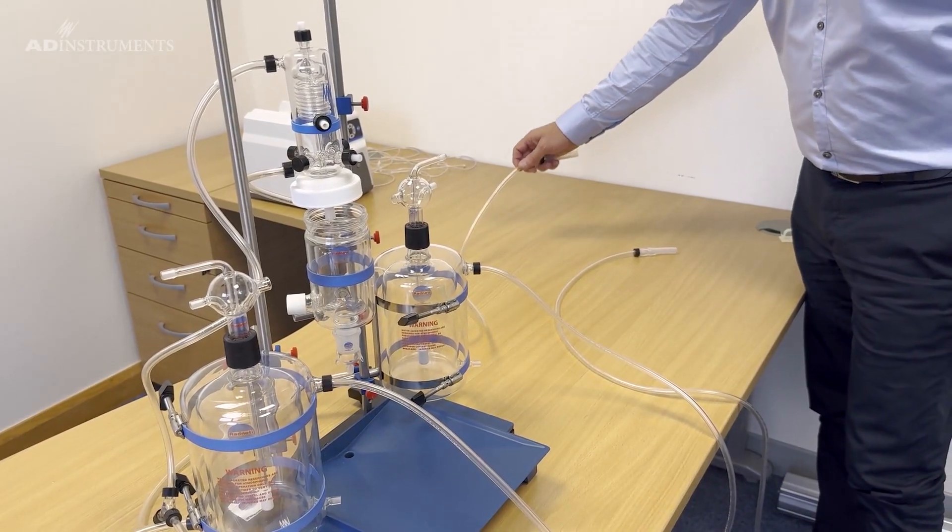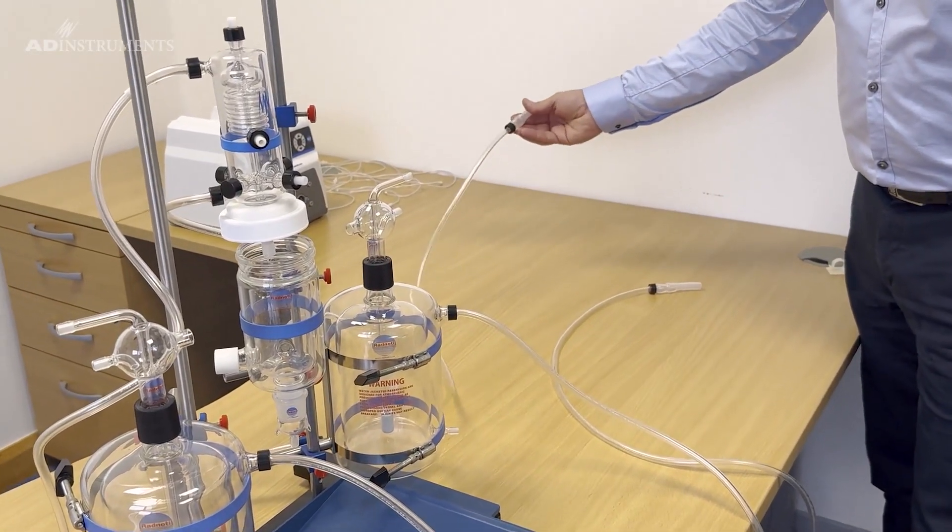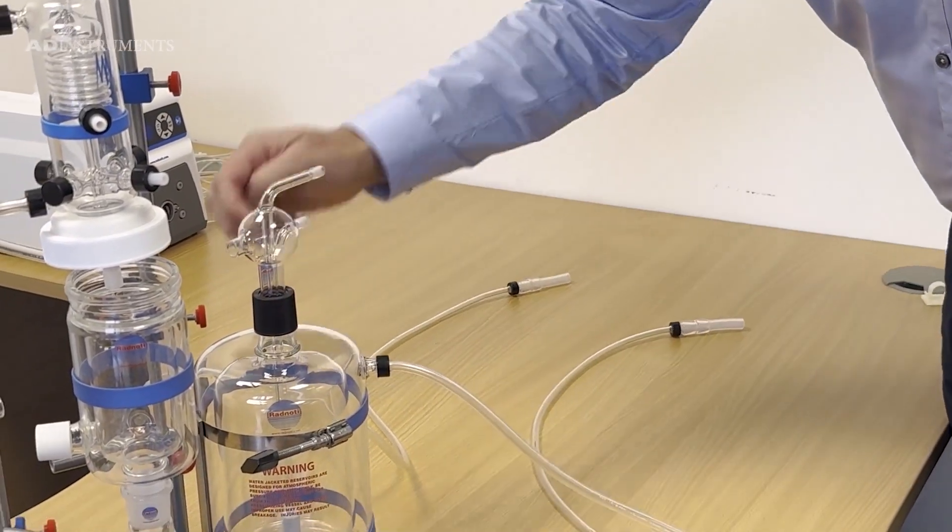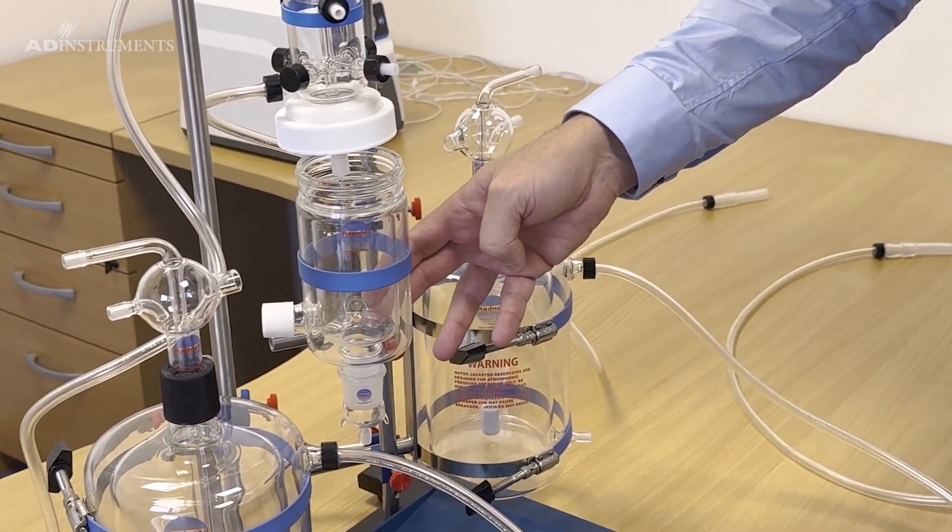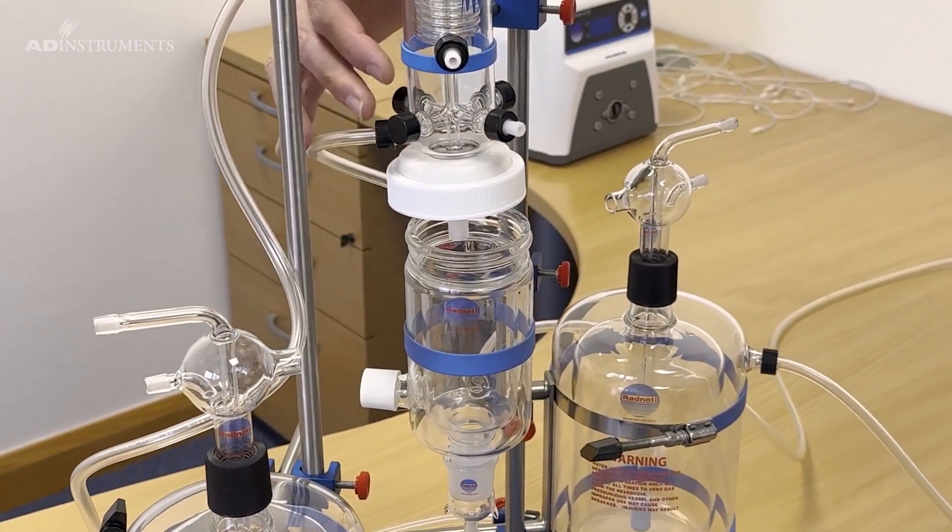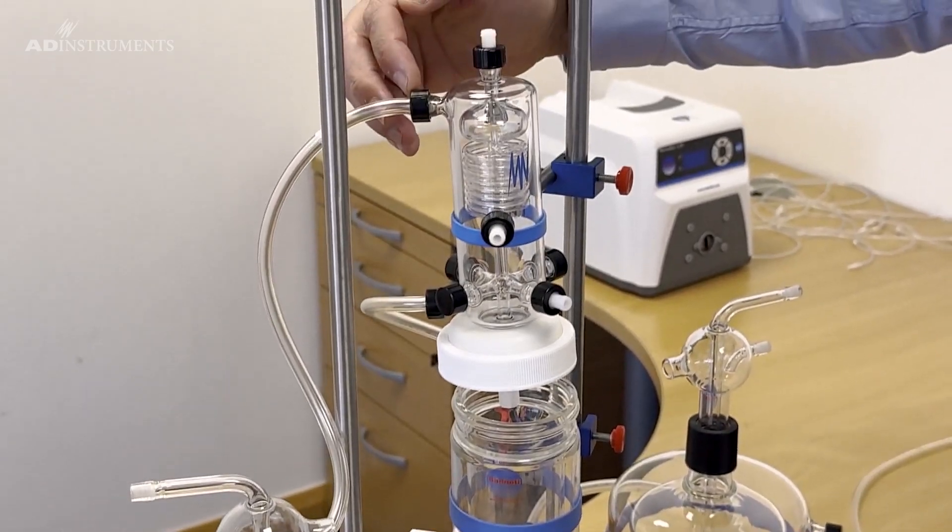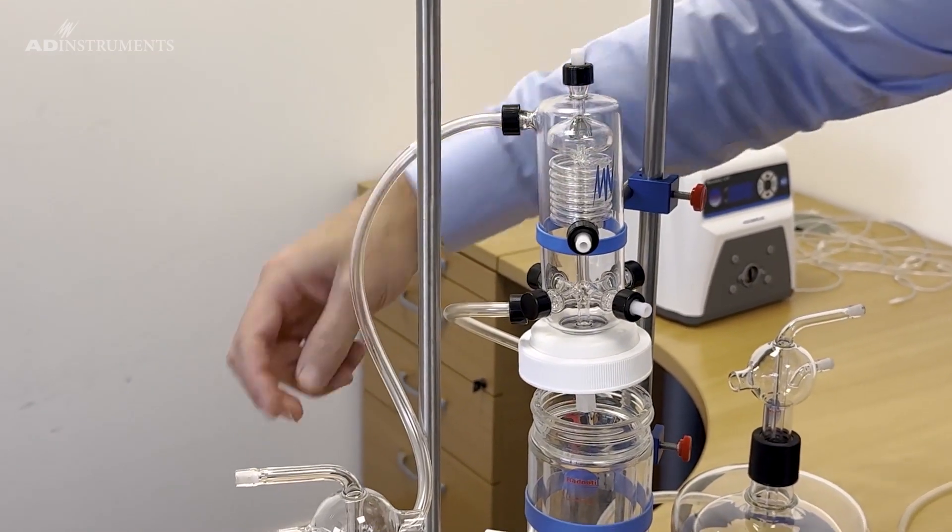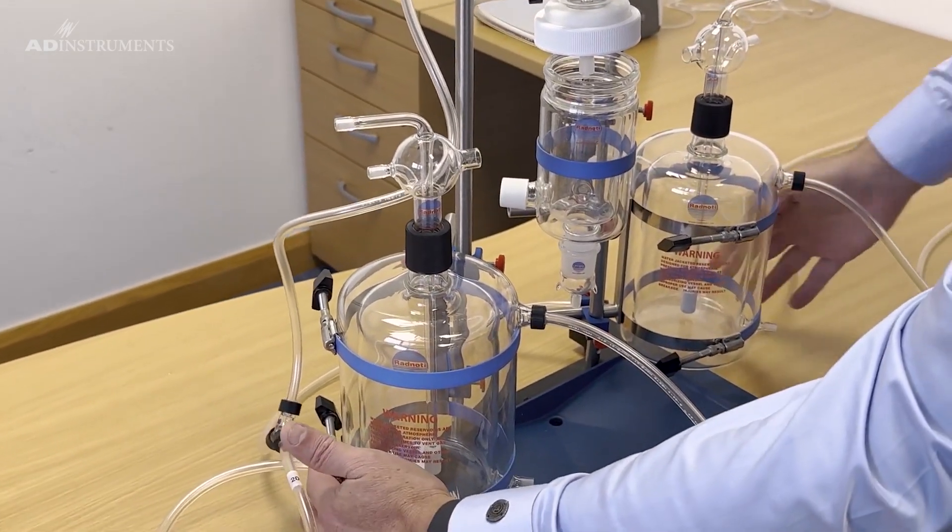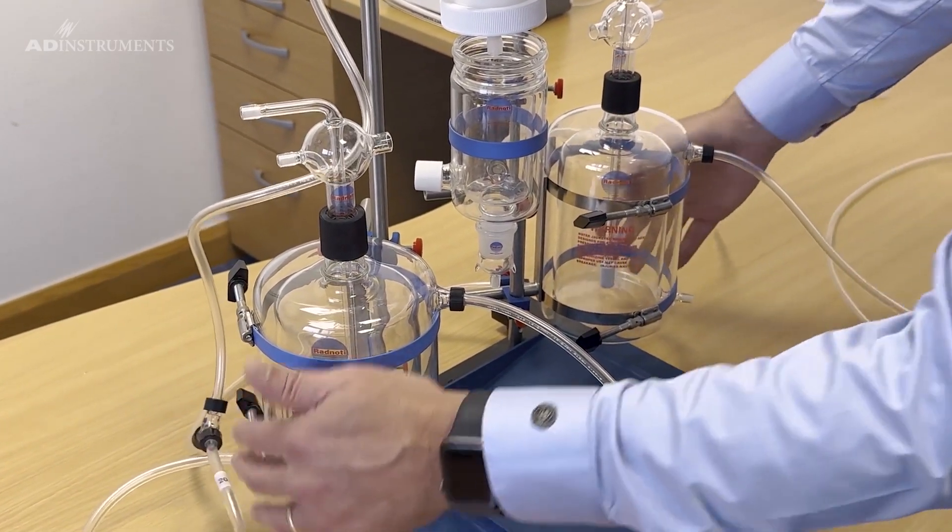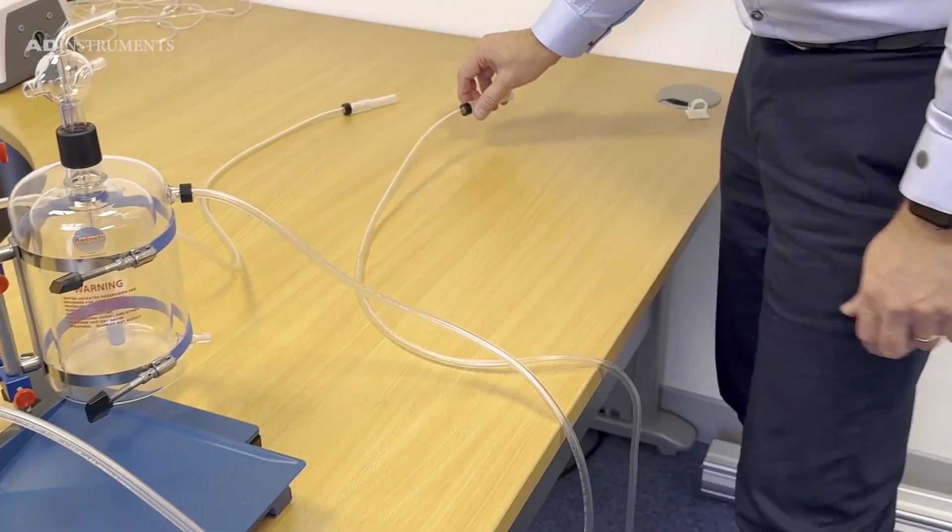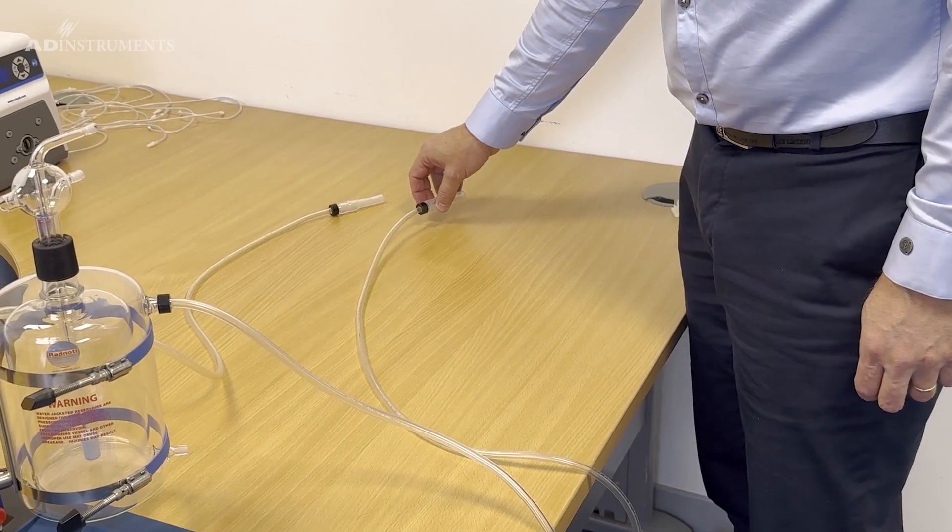Next I'll show the water jacketed circuit. It comes from the heated water circulator, first goes into the heart chamber, then from the heart chamber it goes to the perfusion core, and from the perfusion core it goes through a Y adapter to the bottom ports of the perfusate reservoirs.